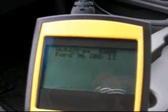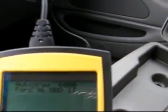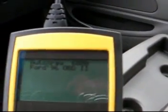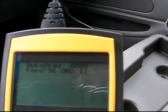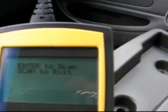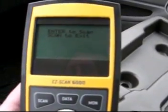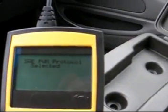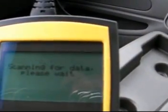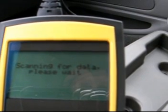So 96 Ford Thunderbird uses Onboard 2. I'm going to do a scan, press the scan button, then press enter, selects the proper protocol for the vehicle.